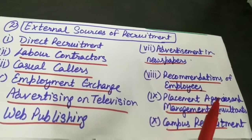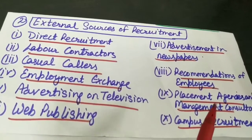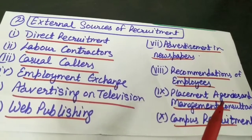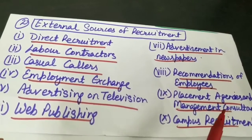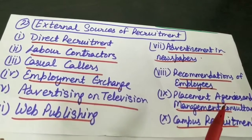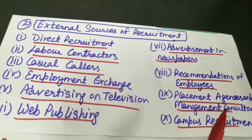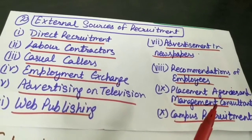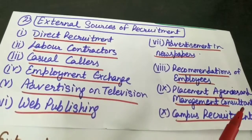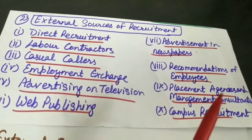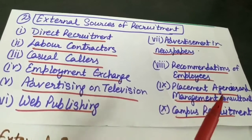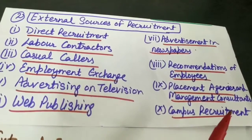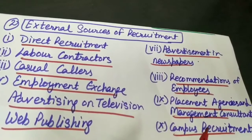Next source of recruitment is recommendations of employees. Zyadatar jo organizations hain woh encourage karti hain apne existing employees ko ki woh recommend karen names of their friends or relatives for employment whenever there is any vacancy. Jo applicants hain they are basically good employees and unka jo background hai, that is also sufficiently known to the employer. Under this method, a type of preliminary screening takes place aur jo existing employees hain, they recommend un logon ke naam jo match karte hain job profile se.